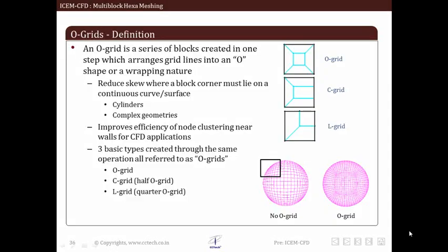A special type of split in ICEM CFD is O-Grid. Let us look into detail what O-Grid is and what is its significance. An O-Grid is a series of blocks created in one step which arranges grid lines into an O shape. The O-Grid block option allows us to modify a single block or blocks into 5 sub block topology in 2D and 7 sub block topology in 3D. Now a question may arise that what is the need of this type of split? We need to ensure that curvature is captured properly. There may be corners of block lying on curve resulting in highly skewed elements as highlighted in figure. Hence, to avoid skewed elements formed at corner of block it is split in such a way that curvature can be properly resolved along with good quality mesh.